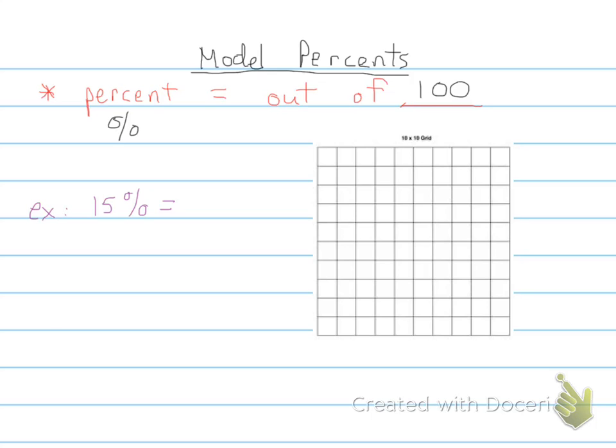I'm going to start with a couple of examples of how to model percents. First one: 15 percent. If you were to write that as a fraction, would be 15 out of 100. You have here a 10 by 10 grid, which is a hundred grid, so there are a hundred boxes there.